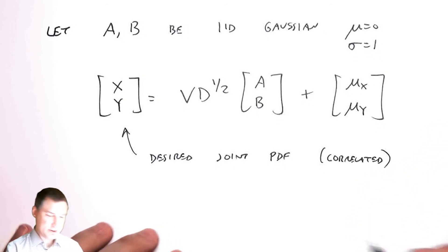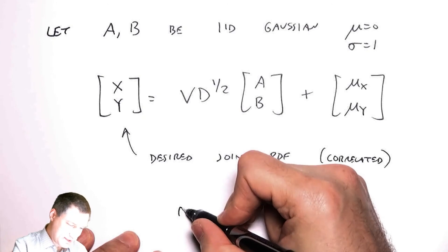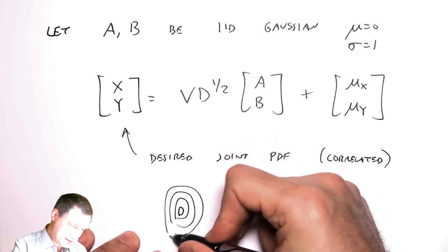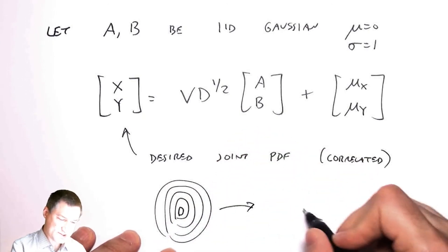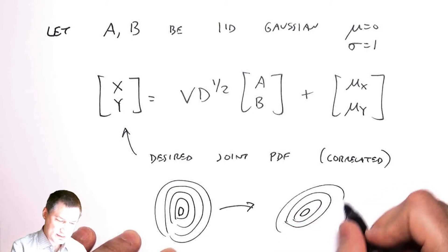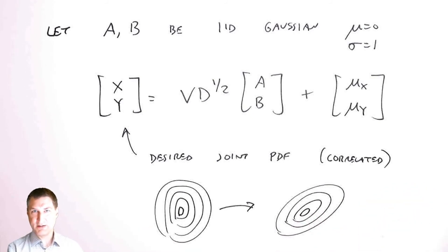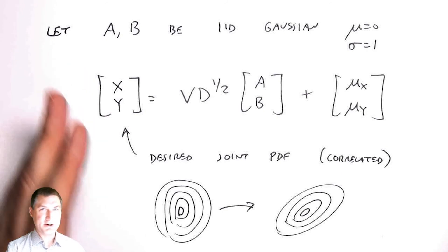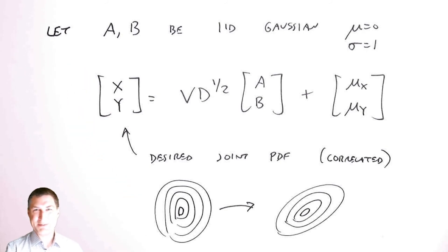Conceptually what I'm doing is I'm taking something that used to have equal probable contours like this and then I'm rotating it to get these correlated random variables. You can prove that that's what's happening if you were to do the transform methods we talked about. Probably unlikely that you're going to have to do this, but it's good to know that it's possible to do.